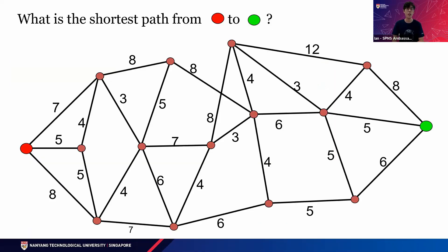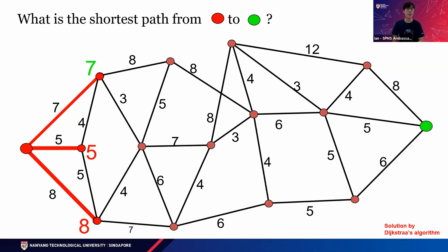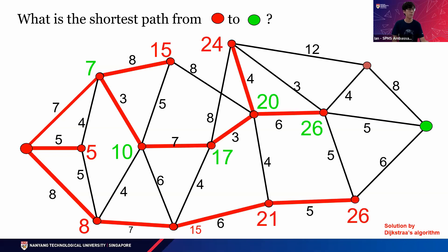Here's a question for you. What is the shortest path from the red dot to the green dot? Here we use an application of graph theory. The numbers connecting each dot can be represented as meters. Starting from the red dot, we see that the number seven actually leads a path to the green dot. From there, we continue to branch out until we reach our goal. We can see that it takes a minimum of 31 meters to get to the green dot.